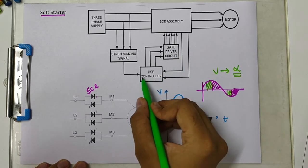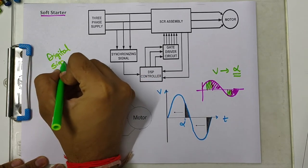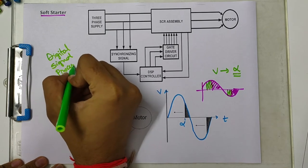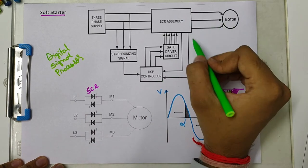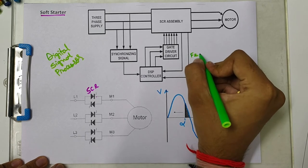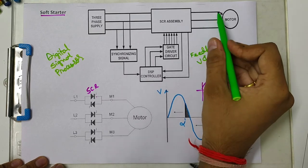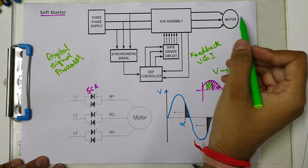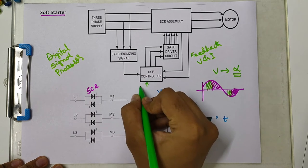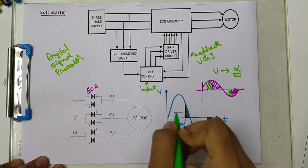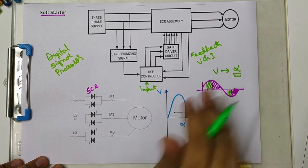The gate driver circuit receives information from the Digital Signal Processor (DSP), which is a very fast microcomputer or microcontroller. It reads the values of voltage and current - this is the feedback of V and I. It measures the voltage and current going into the motor and takes the synchronizing signal from the input supply.